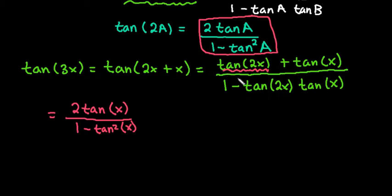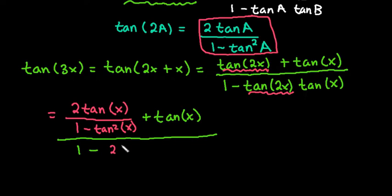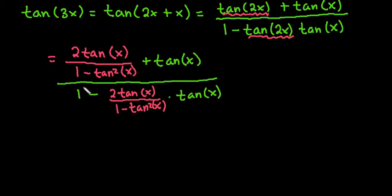Everything else has to stay the same for the top part, so we would have still the plus tangent x over 1 minus, and again we're going to replace our tangent 2x with the same thing that we did on the top, 2 tangent x over 1 minus tangent squared of x times tangent x. So now we have an ugly mess, really. We have a really complex fraction that we don't want to have. So what we need to do in order to simplify this complex fraction is we're going to have to multiply both the numerator and the denominator by the lowest common denominator of both the numerator and the denominator.